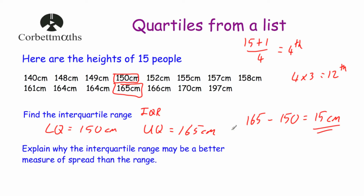We're also asked to explain why the interquartile range may be a better measure of spread than the range. Looking at these heights, we can clearly see there's a very tall person of 197cm — they might be an outlier and make our range a lot bigger. For the first 14 people from 140cm to 170cm, the range is only 30cm. But when that 15th person comes along with 197cm, the range jumps up to 57cm — a big increase. The interquartile range isn't affected by outliers as it only looks at the middle 50% of the data. So the interquartile range is a better measure of spread because it's not affected by outliers or extreme values.